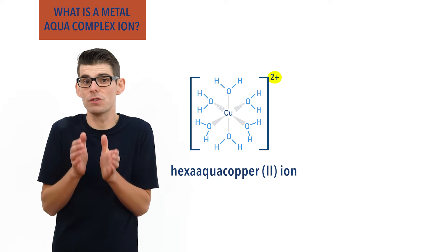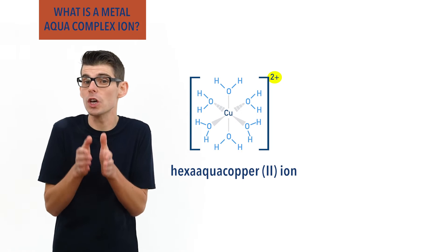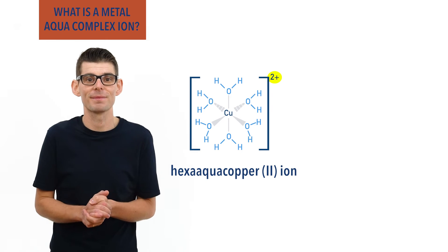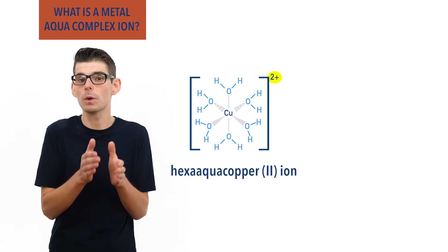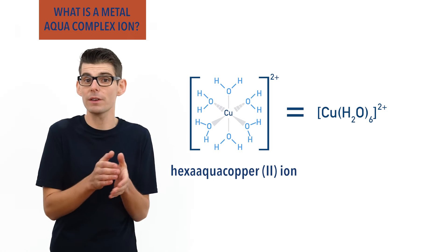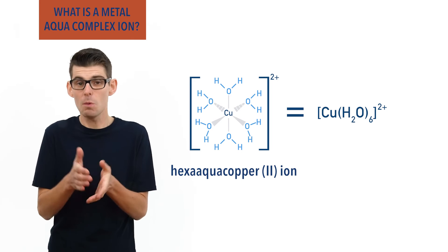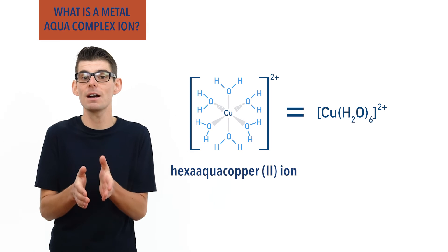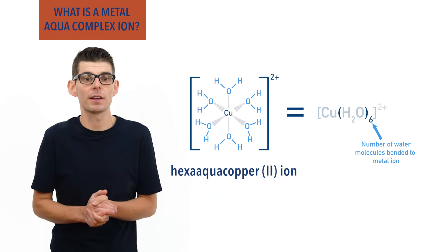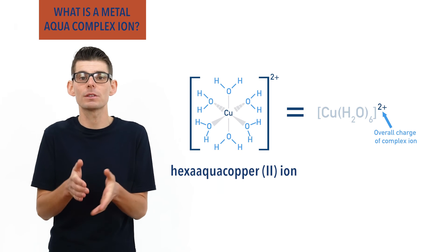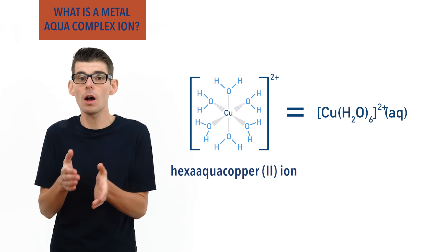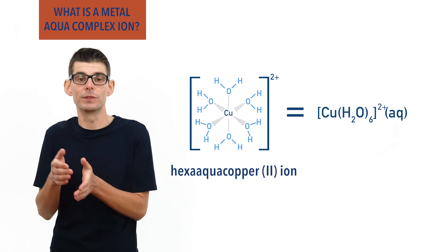Technically, the 2+ charge is no longer considered to belong just to the copper ion anymore — it's spread out throughout the whole complex ion. Because of this, we write hexa-aqua complex ions in square brackets, with the number of water molecules around the metal ion shown in curved brackets, with a subscript number telling us how many water molecules there are in each complex ion. The overall charge of the complex ion is then shown as a superscript number outside the square brackets. Aq is often shown as a state symbol after the formula to show the complex ion is dissolved in water.